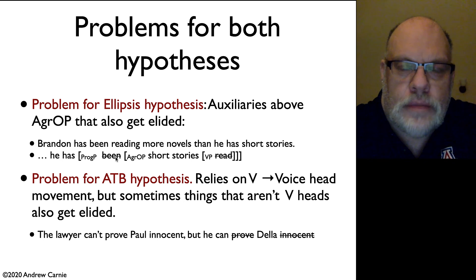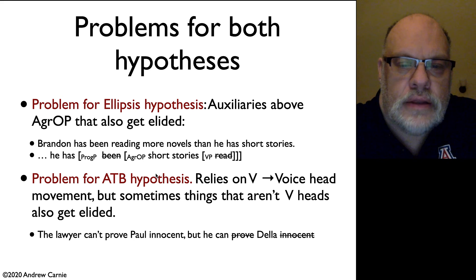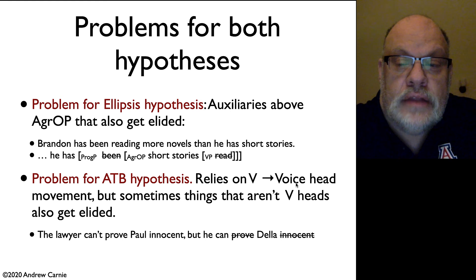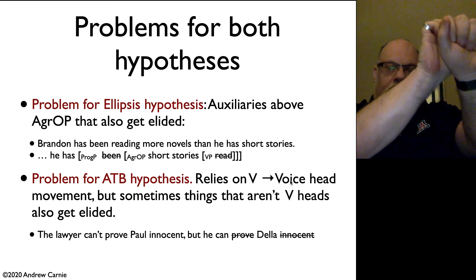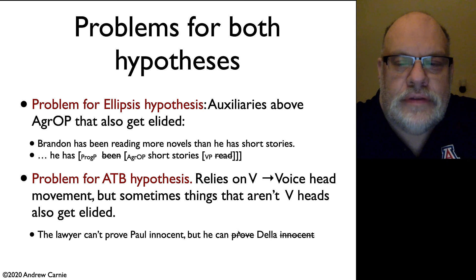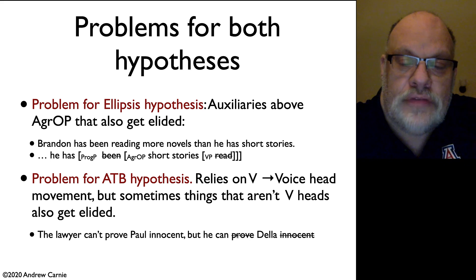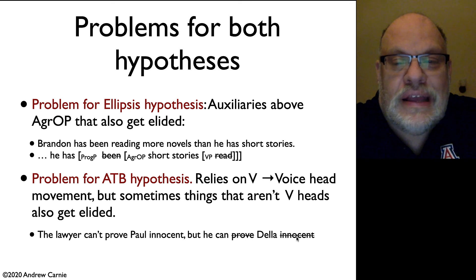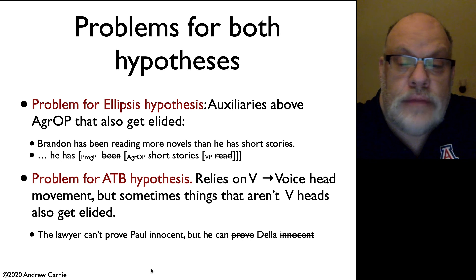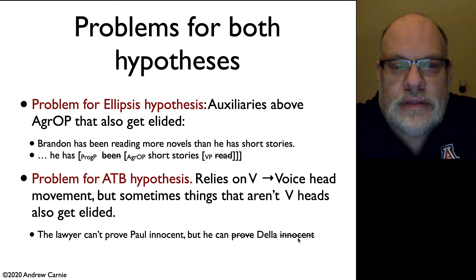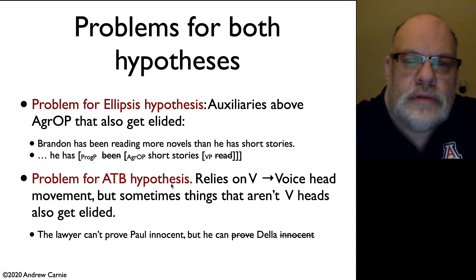But there's also a similar problem for the across-the-board hypothesis of Agbayani and Zorner. It relies on across-the-board movement of verb heads into Voice heads — taking two verbs and moving them both into the same Voice head. The problem is that sometimes things that aren't Voice heads get elided in the second clause. If our explanation were that 'prove' was moved up to the Voice head, that would explain why 'prove' gets deleted — but it doesn't explain why 'innocent' gets deleted. The absence of the main verb under the ATB hypothesis is due to head movement, but if you're deleting things other than heads, that hypothesis can't work. So there are problems for both hypotheses.